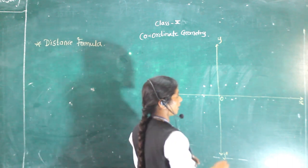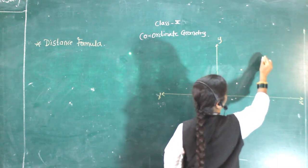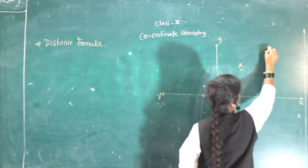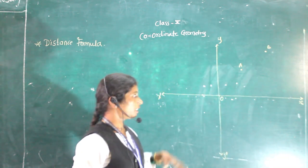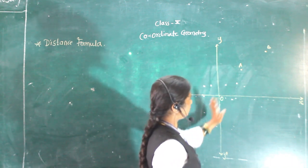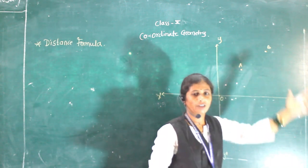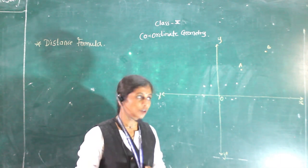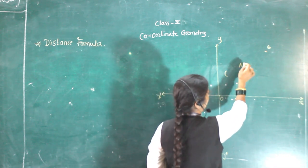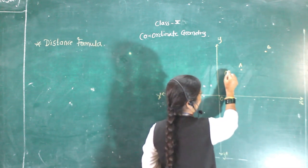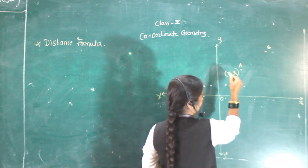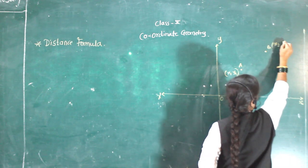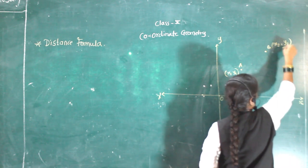Now suppose we have taken two points in this plane — point A and point B. We have to find out the distance between these two points. The coordinates of point A are x1, y1 and the coordinates of B are x2, y2.